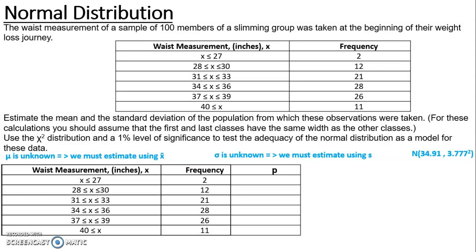That maximum value is 27.4999... recurring. So when inputting the values for your lower and upper bound you need to be using 27.4999... and then your mean and standard deviation. For the second category I need everything that rounds up to 28, so 27.5 is my lower bound, and everything that rounds down to 30 gives an upper bound of 30.4999... Putting those into your calculator you should get the corresponding probabilities.